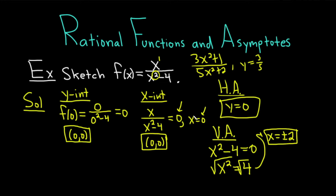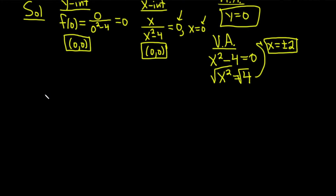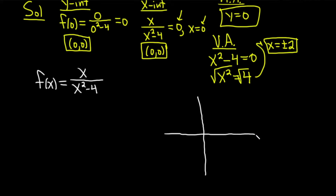We've got our intercepts and asymptotes. We're ready to attempt to draw the graph. We had f of x equals x over x squared minus 4. Drawing the axes, we have a y-intercept and x-intercept of (0, 0) at the origin. The horizontal asymptote y equals 0 lies along the x-axis, shown by a red dotted line. We have two vertical asymptotes at x equals 2 and x equals negative 2.